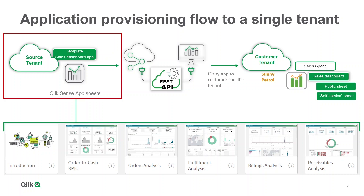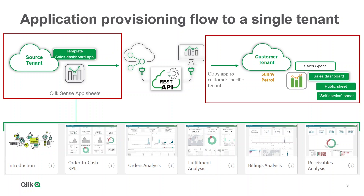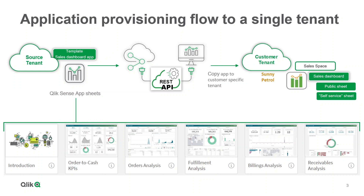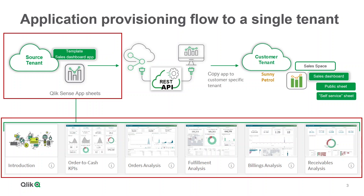The principle of SaaS automation is quite simple. You first create a template app, also called a dashboard, and you make a copy for each of the customer instances on your SaaS platform. The template app already contains a template with 80% of the functionality, and we provide some predefined sheets, charts, dimensions, and measures to get you started.